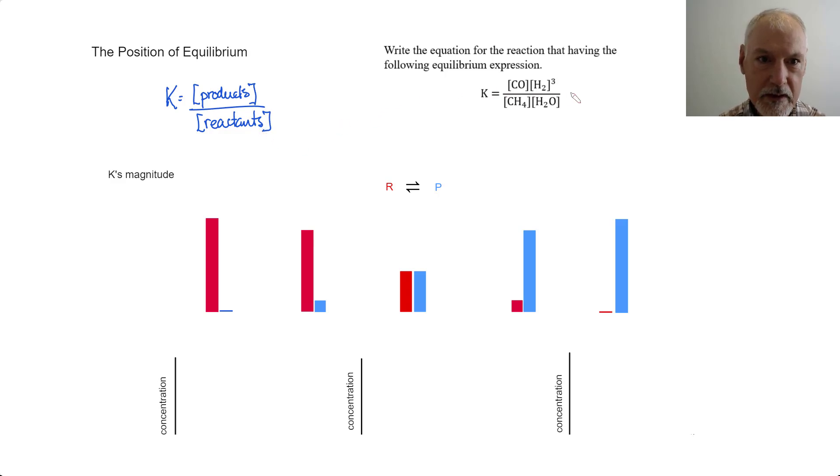Here we're given an equilibrium expression and asked to derive from it the original equation. Well, we can recall that the top part gives us our product information. So, this is going to produce carbon monoxide and three hydrogens.